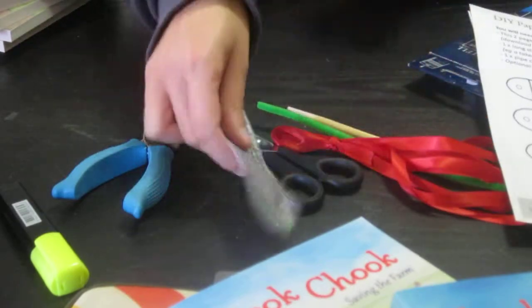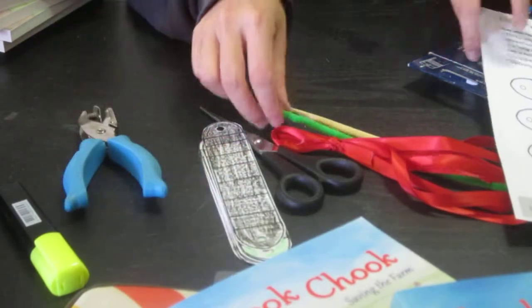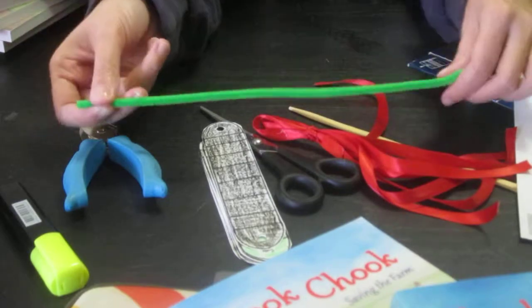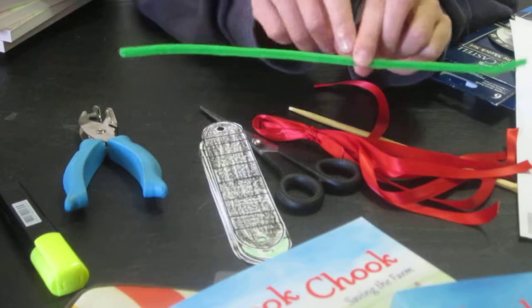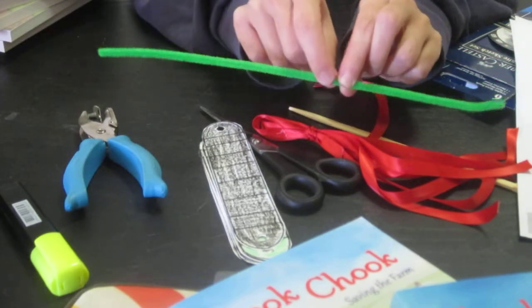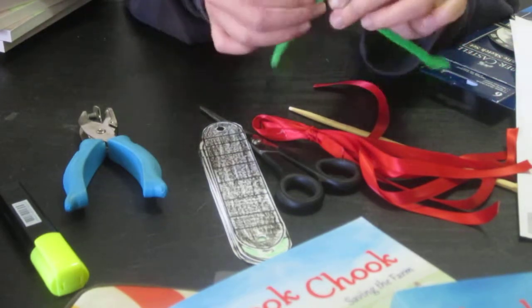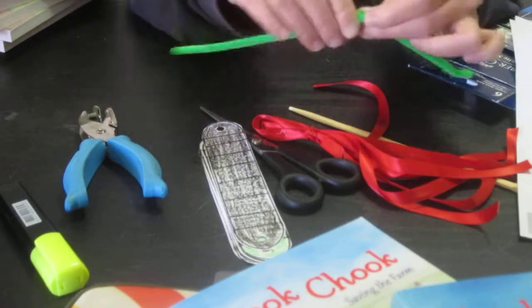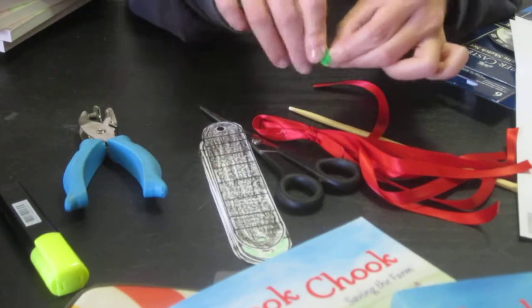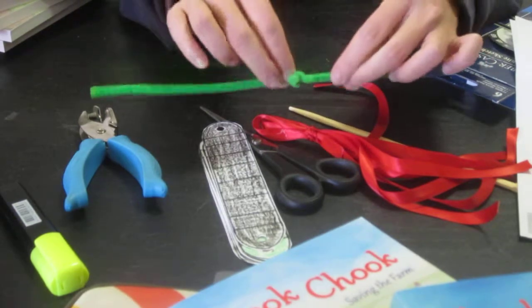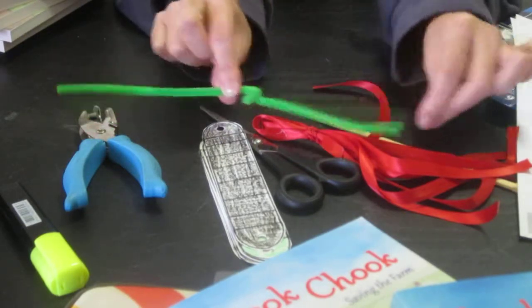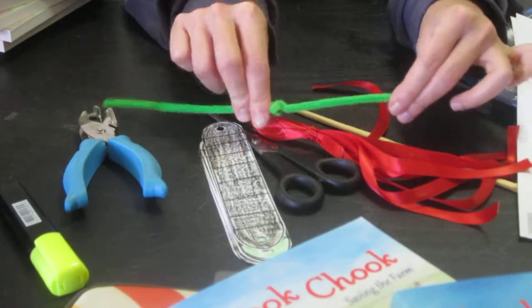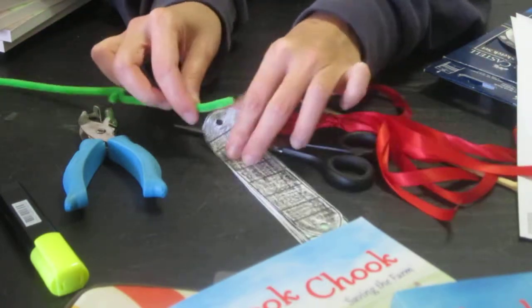Once you're done with that, you're going to set your strips down and take your pipe cleaner. Take your pipe cleaner and go just about halfway down. You're going to make a kink, and you can do that simply by twisting the pipe cleaner around like so. This kink is just to stop your strips of paper from falling through.